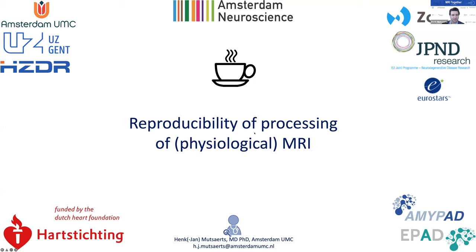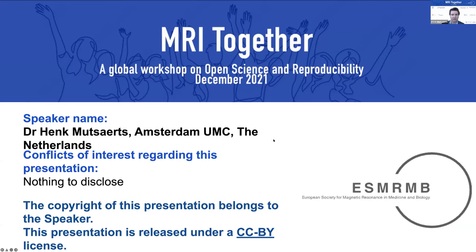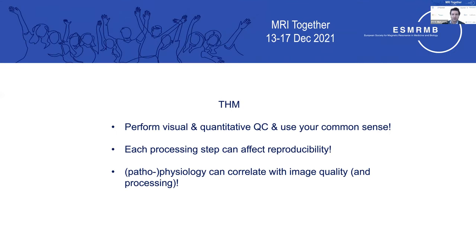In the spirit of this workshop, I would like to look at the image processing of brain MRI from the reproducibility perspective. I'm also going to discuss physiological MRI, which is arterial spin labeling perfusion MRI, which is most of our work. I believe there is a large correlation between pathophysiology and image quality — that's one of the main take-home messages. The other is that you should have visual and quantitative QC, use your common sense, go through each image processing step, and look at how this can affect your reproducibility and comparability of results with other studies.